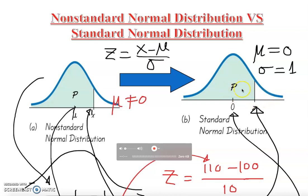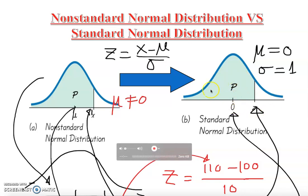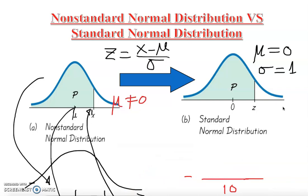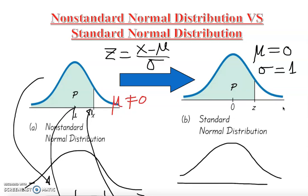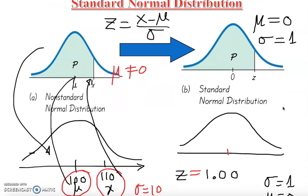Almost all the area under the normal curve lies between three standard deviations. Let me draw a new normal curve here. This is zero in the middle, and I'll mark the z-scores: one, two, three to the right and negative one, negative two, negative three to the left. The reason we go to three in each direction is that almost all the data values lie within three standard deviations.